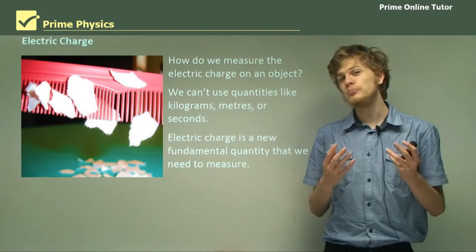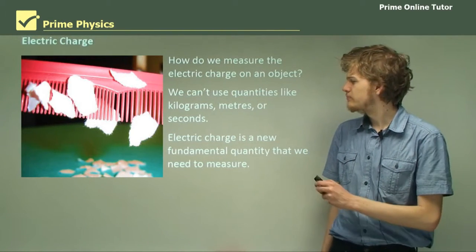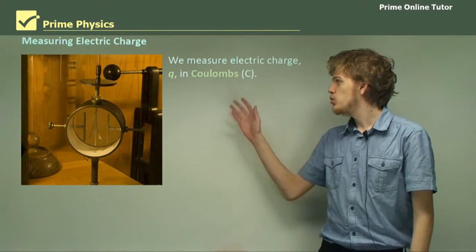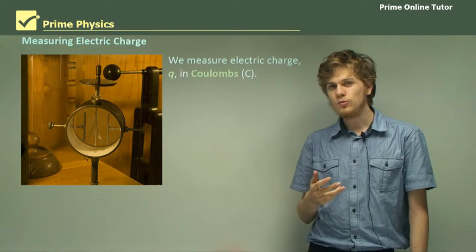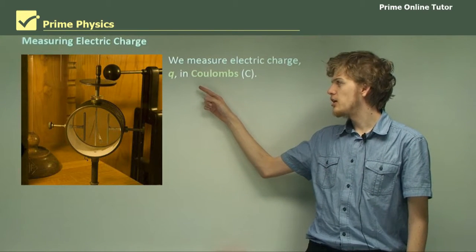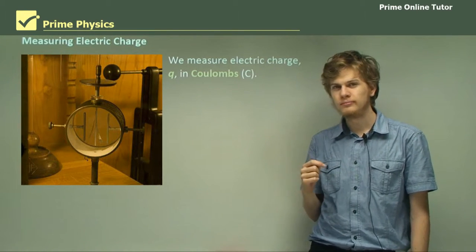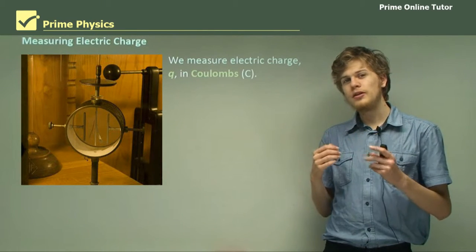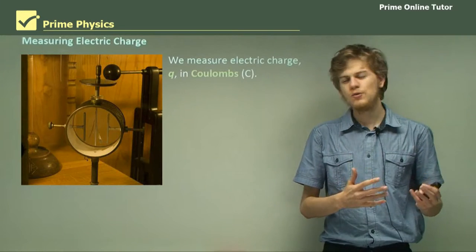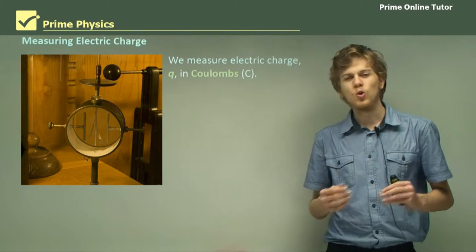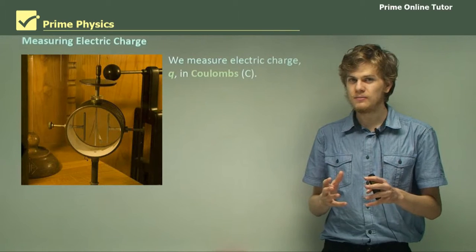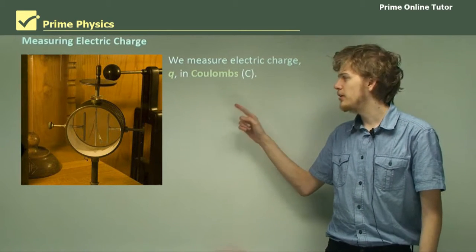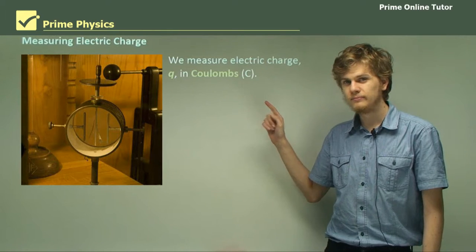We're going to need something we haven't used before. What we will measure it in is coulombs. Algebraically, we represent an electric charge by a lowercase q. In the same way that we use L for length and measure it in meters, or T for time and measure it in seconds, we're going to use q for charge and measure it in coulombs.